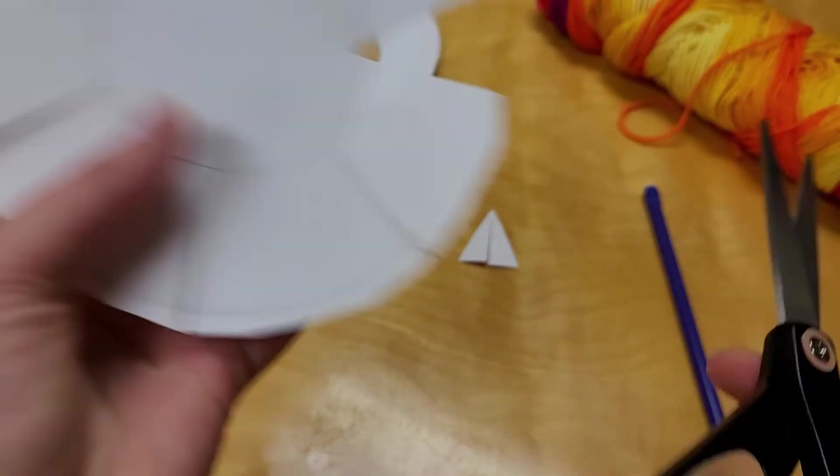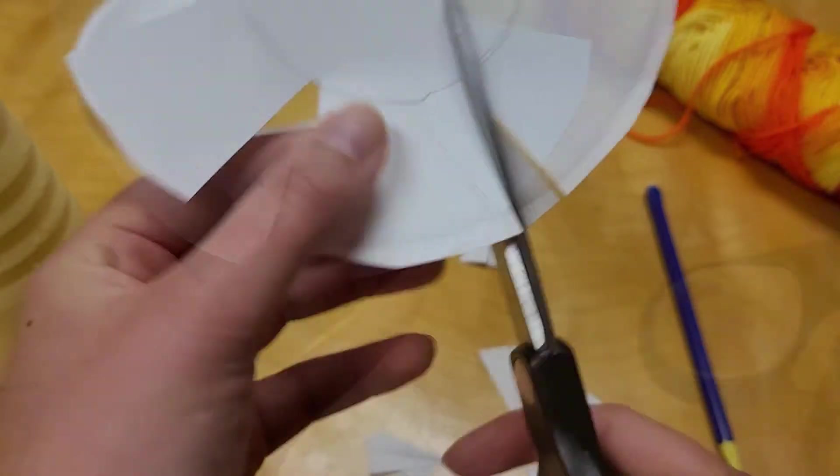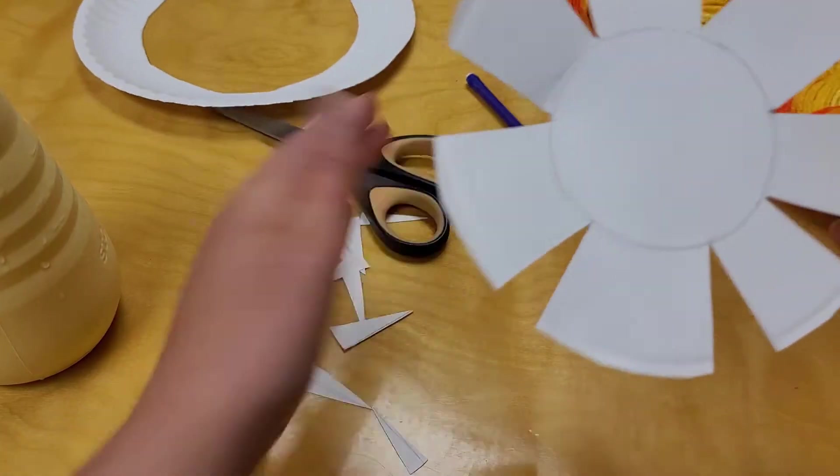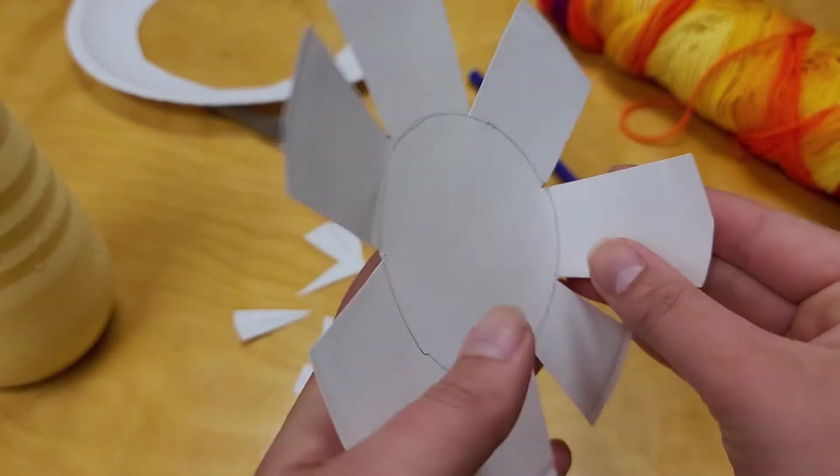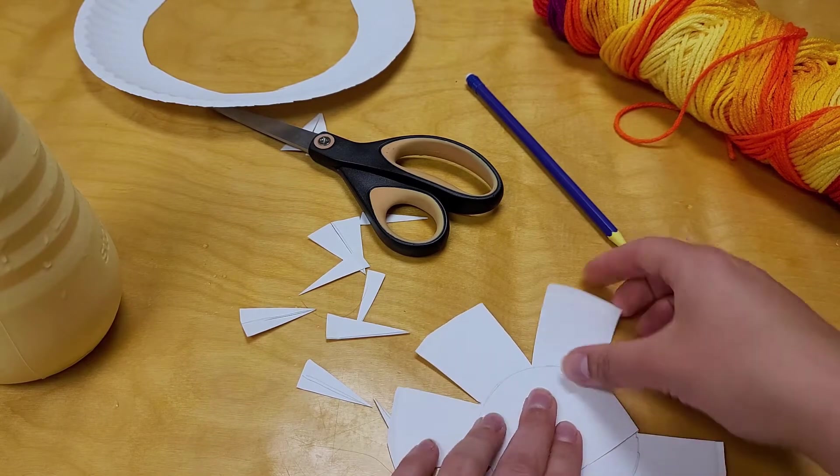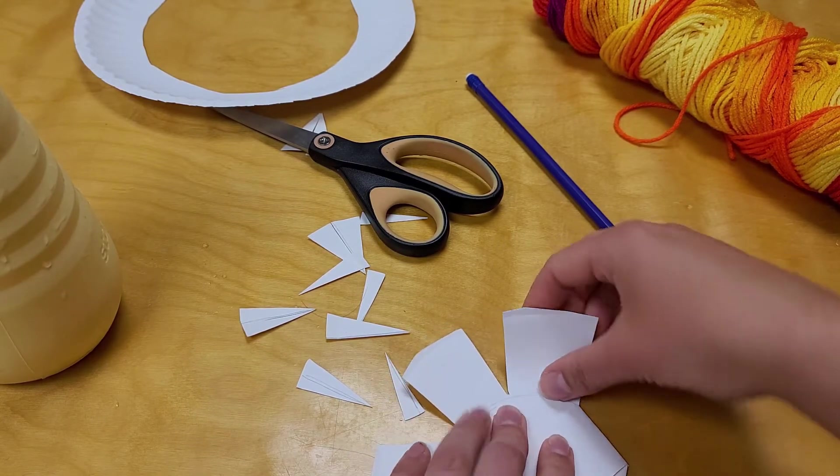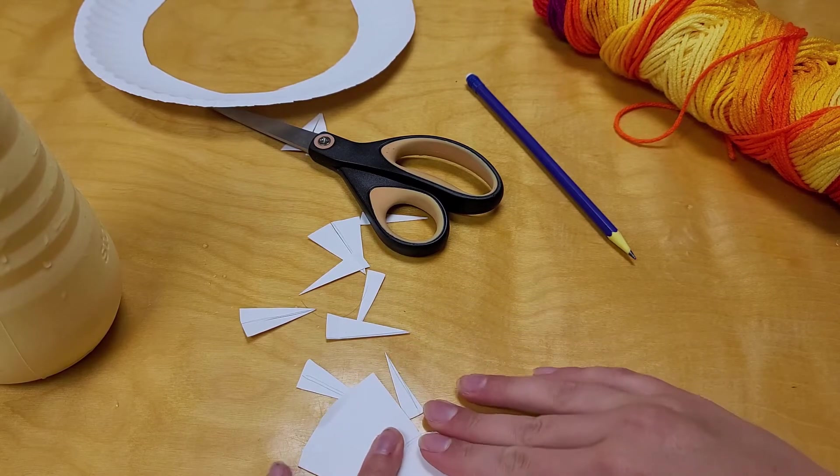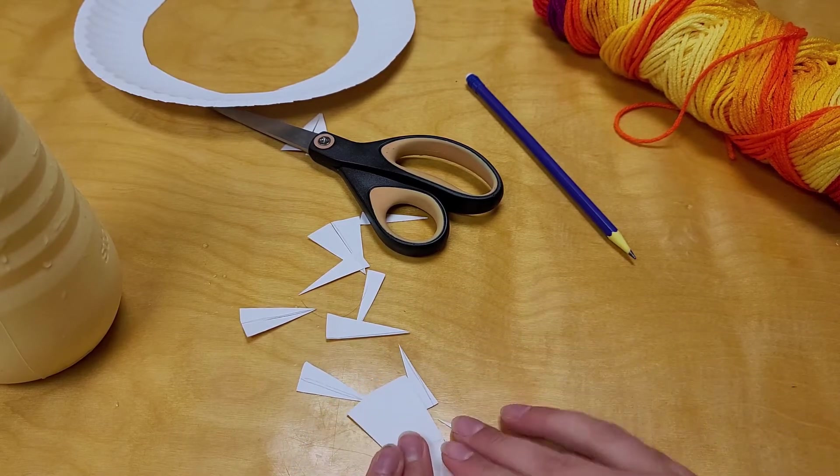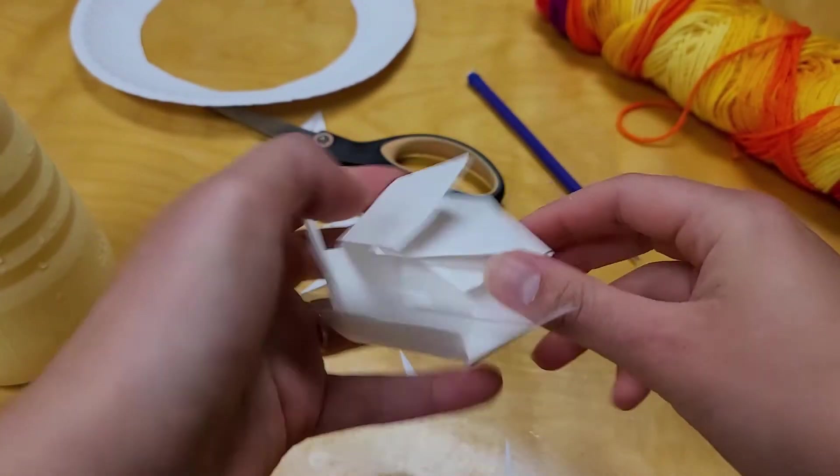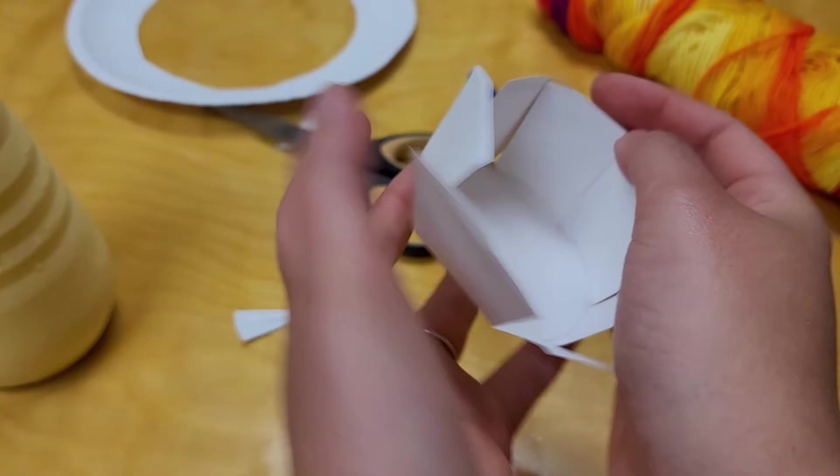All right, I am now ready. Now all you're going to do is take these spokes and fold them at your base. There's the base of my basket, here are the bones for my basket.